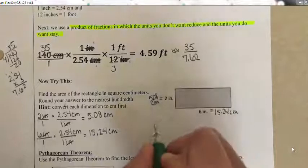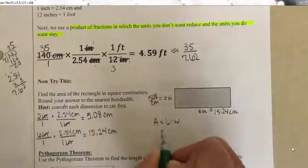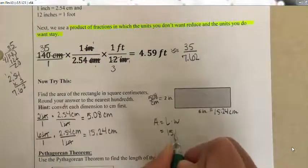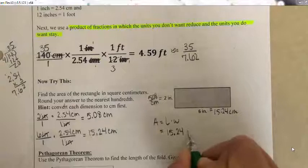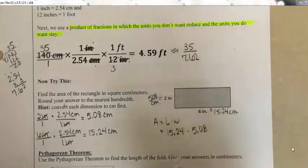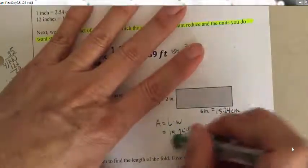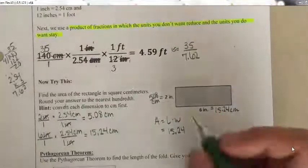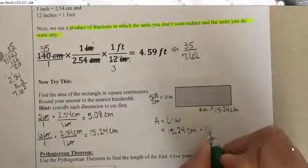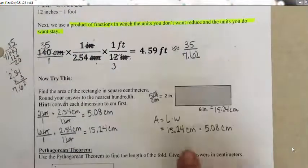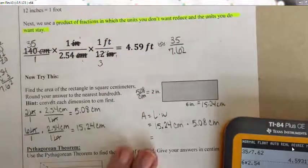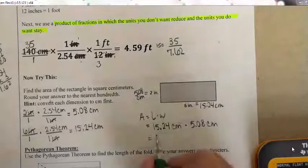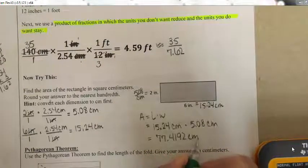Now I can find the area, because the area of any rectangle is always length times width. My length is 15.24 centimeters and my width is 5.08 centimeters. When I multiply I have centimeters times centimeters, and area is always in squared units. In my calculator: 15.24 times 5.08 gives 77.4192 centimeters squared.